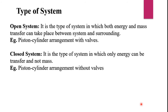Next is a closed system. It is a type of system in which only energy can be transferred and not mass. The example of a closed system is a piston-cylinder arrangement without a valve. If there is no valve, there is no transfer of mass — only energy gets transferred. Such a system is called a closed system.